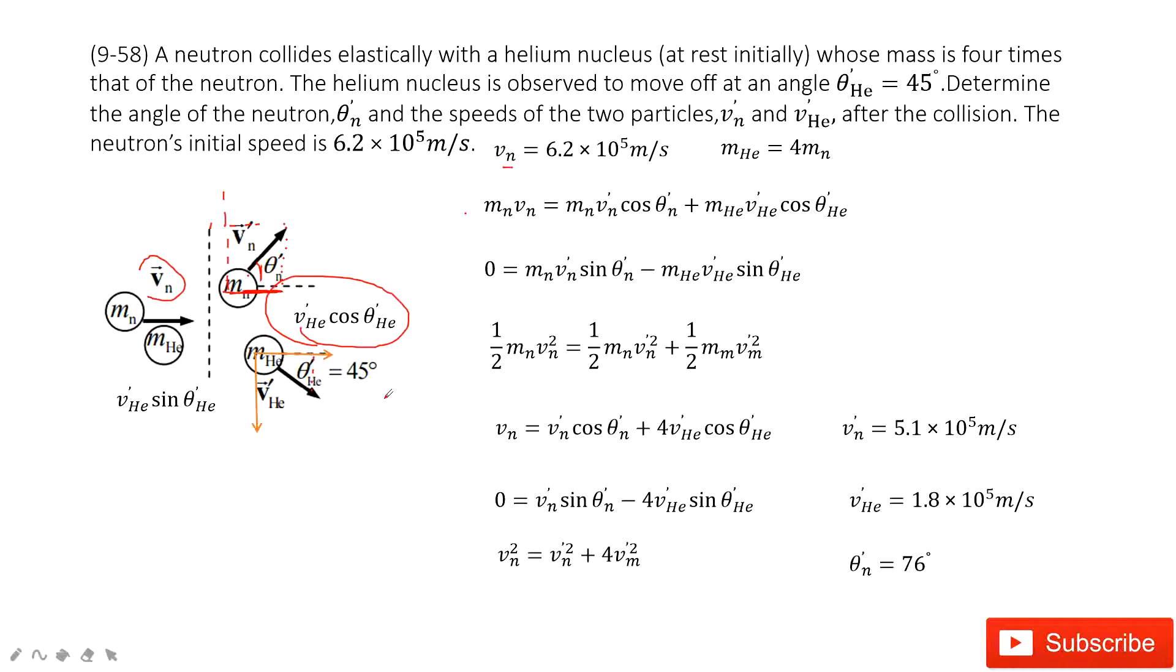Then we look at the y-component. For y-component, initially it is zero. And then finally, we project the neutron in the y-component. So the length is this one. It's Vn plus times sine theta n plus.